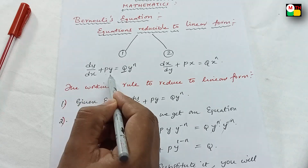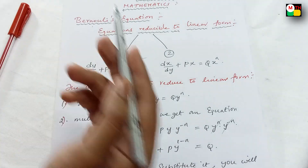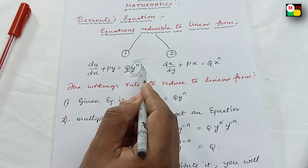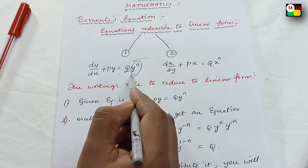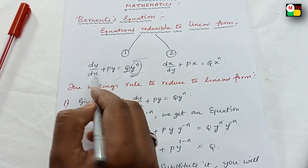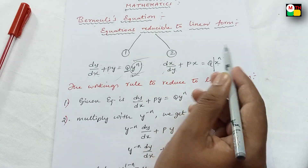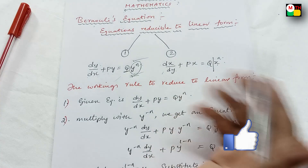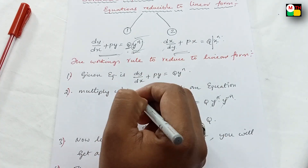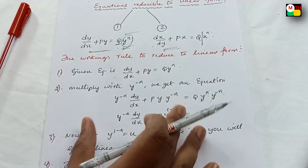Here, dy/dx plus Py equal to Q into y^n. You need to remember: x squared, y cubed — y^n. And the working rule to reduce to linear form — so linear form reduce — so my channel visit, subscribe.